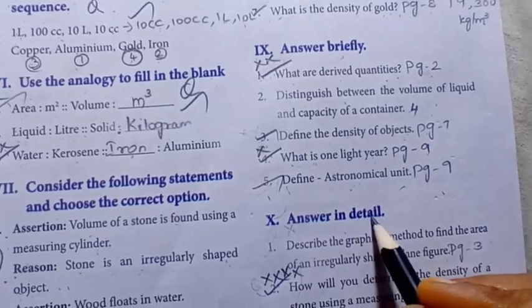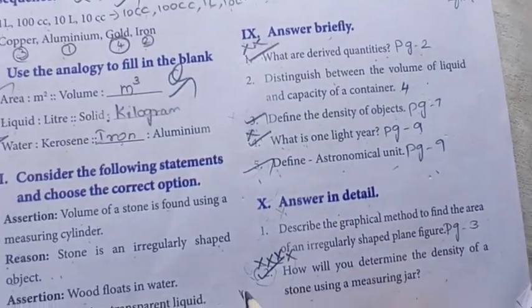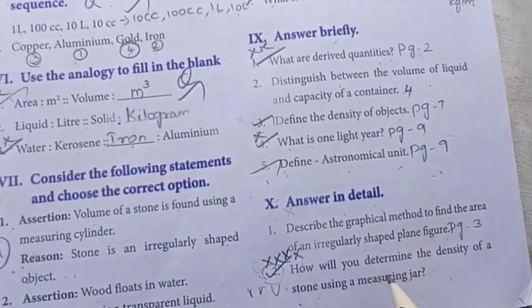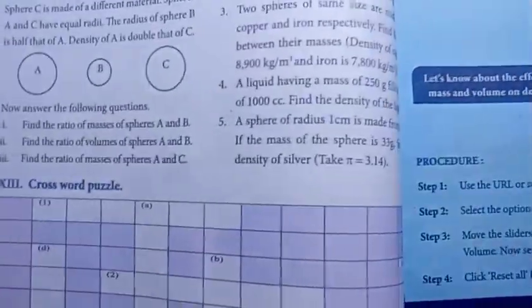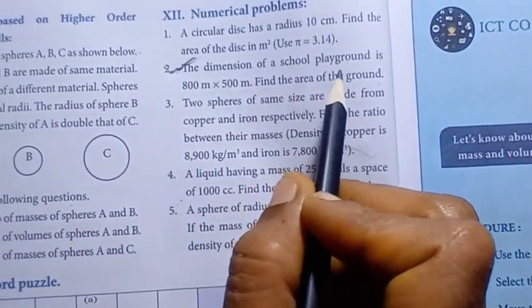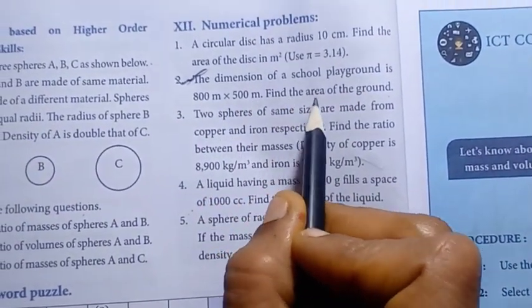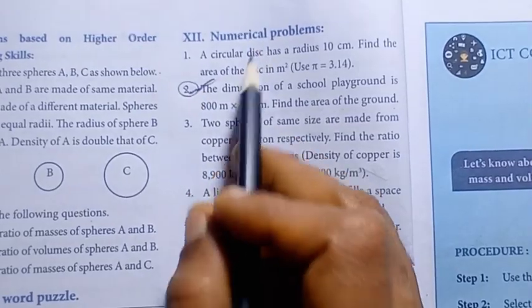Next, answer in detail. Second, repeat question. How will you determine the density of a stone using a measuring jar? Page number 12. The dimension of a school playground is 800 meter into 500 meter. Find the area of the ground. Second one in the numerical problems, second one important question.